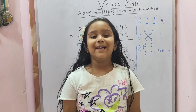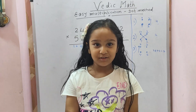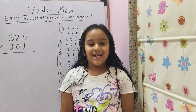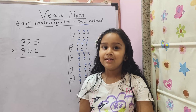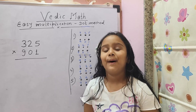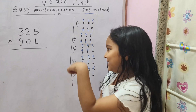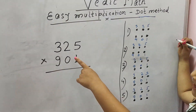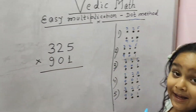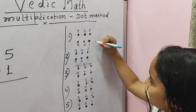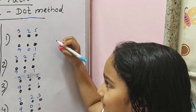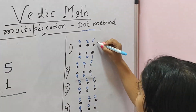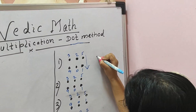So now let's see how to use it with 3-digit numbers. Remember, this is 5 steps. So let's do 325 multiplied by 901. The first step: we do the right-side standing line, which is 5 times 1, giving us 5.